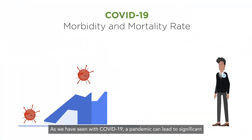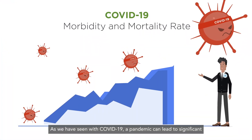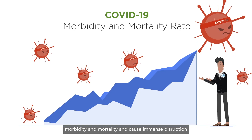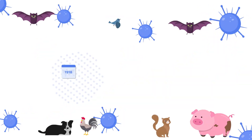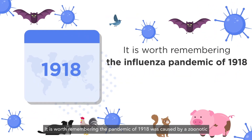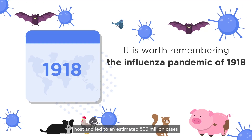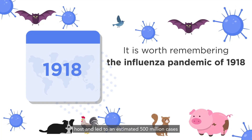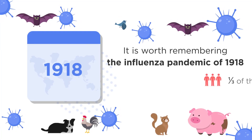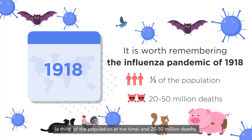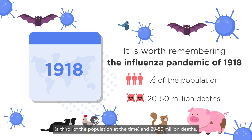As we have seen with COVID-19, a pandemic can lead to significant morbidity and mortality and cause immense disruption. It is worth remembering the pandemic of 1918 was caused by a zoonotic host and led to an estimated 500 million cases — a third of the population at the time — and 20 to 50 million deaths.